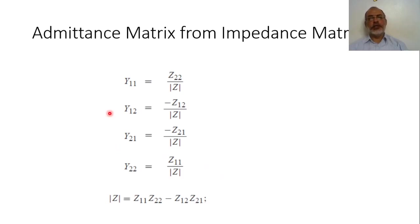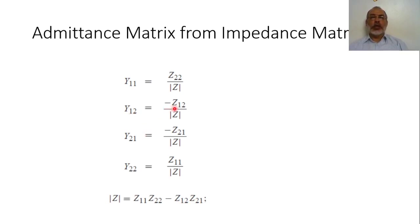If we are interested in obtaining the admittance matrix from the impedance matrix: Y11 = Z22 over det(Z), where det(Z) = Z11·Z22 − Z12·Z21. Y12 = −Z12 over det(Z). Y21 = −Z21 over det(Z). And finally, Y22 = Z11 over det(Z).